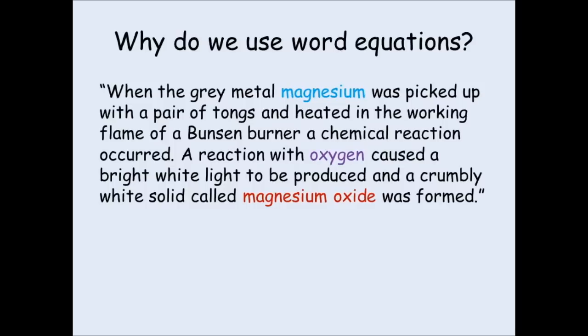So to simplify this paragraph, we can write a word equation. Magnesium reacted with oxygen and magnesium oxide was formed. Now this doesn't give details such as what the magnesium oxide looks like, what you can see during the reaction, but it gives the basic details: what went into the reaction and what was made in the reaction.